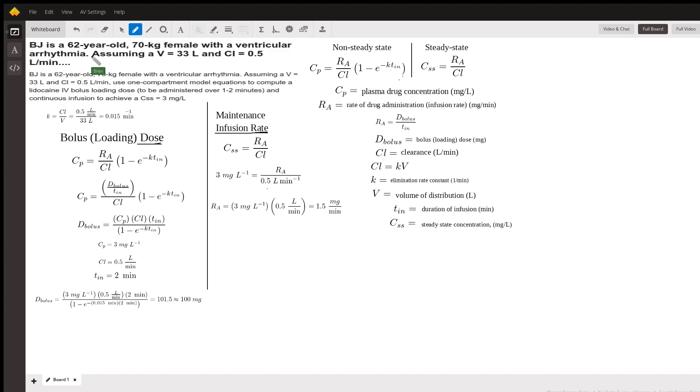We can start by calculating the rate constant of elimination. To do that, we divide the clearance by the volume of distribution, both of which are given, and we get 0.015 minutes to the negative one.